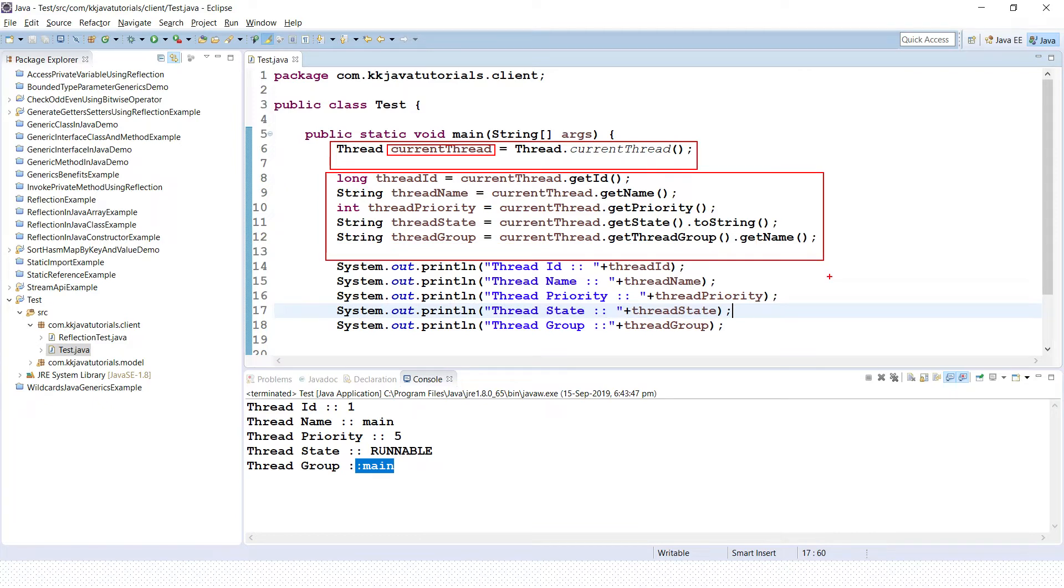After that, once you get the reference of current thread, then here we can get the ID, thread name, priority, its state, and thread group name. Everything subsequently I have printed over here: thread ID, name, priority, thread state, and group.